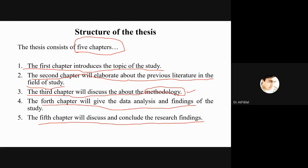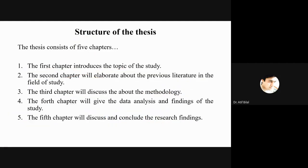Similarly, you write about the fifth chapter, discussing how hypotheses were tested, how objectives were achieved, and how research questions were answered. At the end, you give concluding remarks including limitations of the study and future research directions. Implications of the study can also be discussed. This is how you write the structure of your thesis, giving the reader a very clear idea of how it is organized.